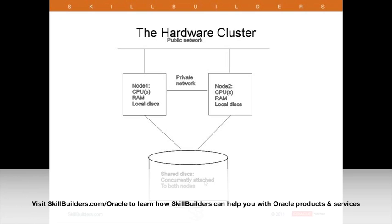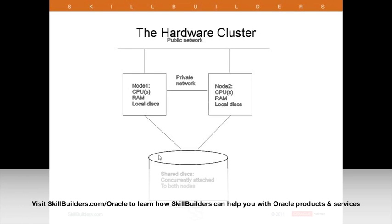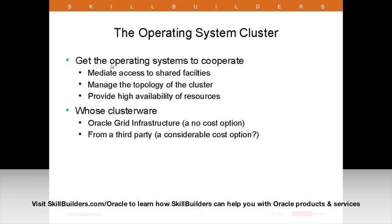The disks are concurrently attached to both nodes — though you can also use various forms of network attached storage, but they must appear to be concurrently and directly attached. On top of the hardware cluster, you build the operating system cluster. The OS clusterware gets your operating systems talking to each other for access to shared facilities. Without cooperation when using shared resources, the results are catastrophic — if two machines write to the disk concurrently without coordination, you've destroyed your file system. The clusterware makes each OS aware of the topology of the cluster — every node knows about every other node.